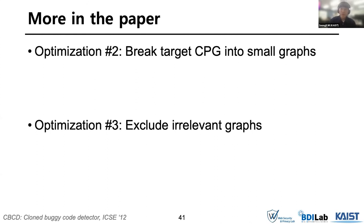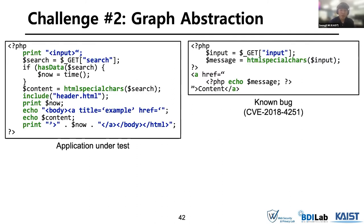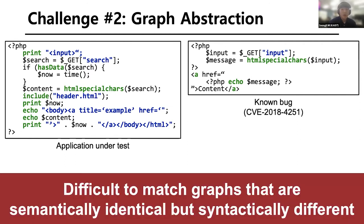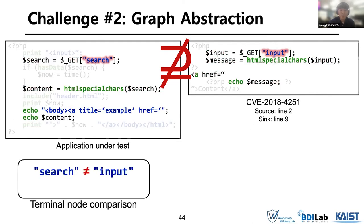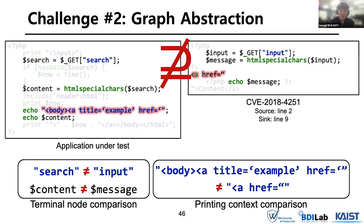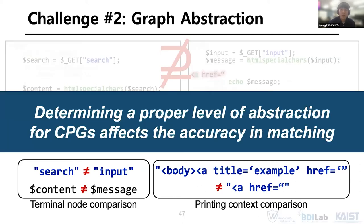Please refer to our paper and the CVCD paper if you're interested in more details about other pruning techniques. The second challenge is that it is difficult to match graphs that are semantically identical but syntactically different. For example, the two CPGs for two semantically identical code snippets do not match, because the nodes representing the string constant, input, and local variable names are different from each other.